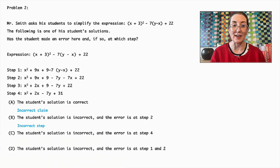Option C states that the error is at step 4, but step 4 is correctly simplified. The correct answer is option D.